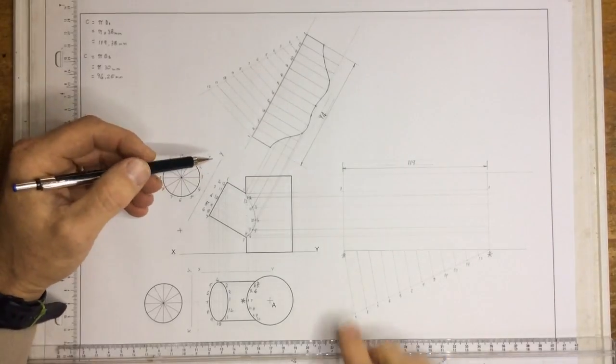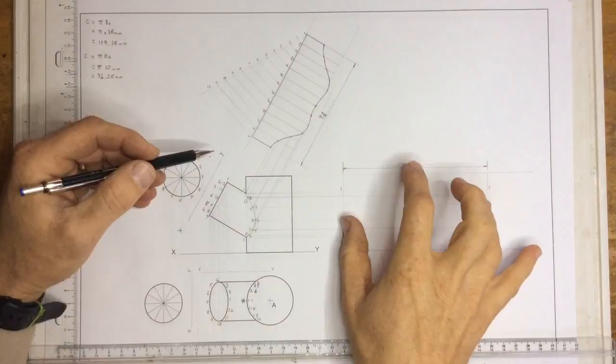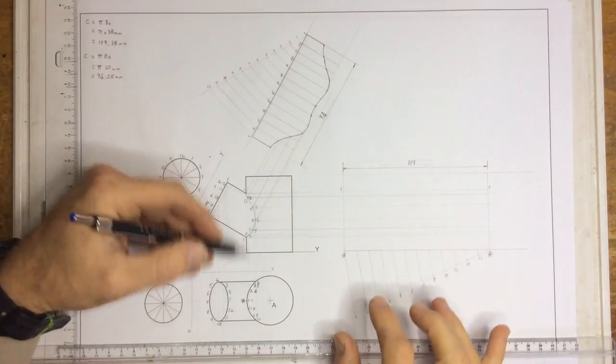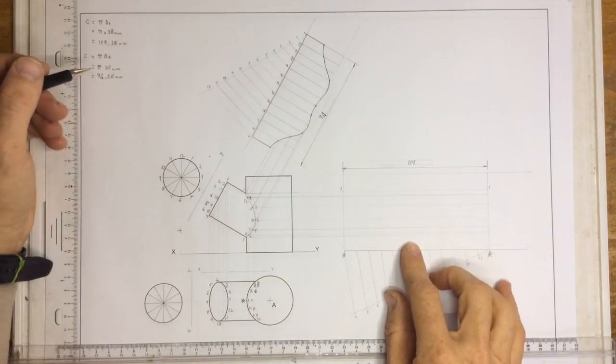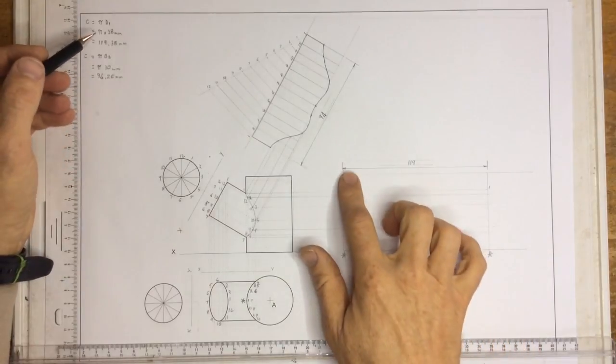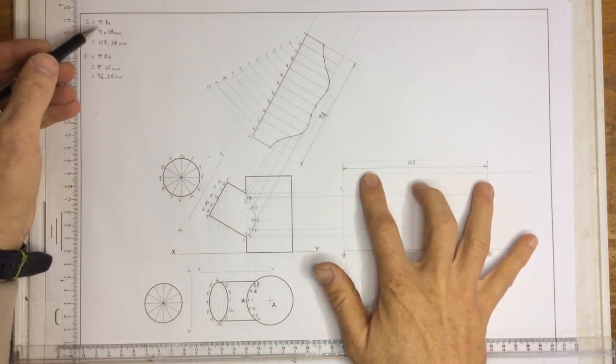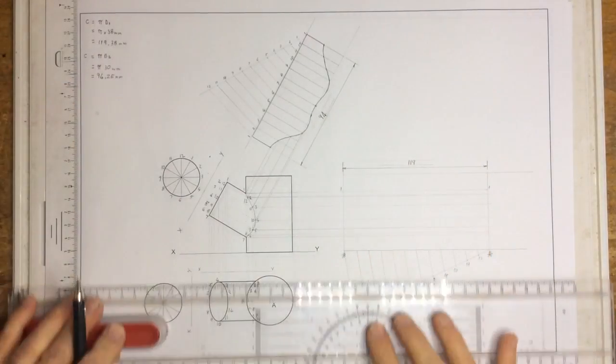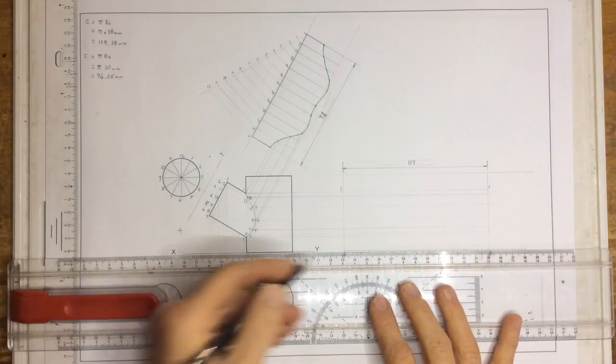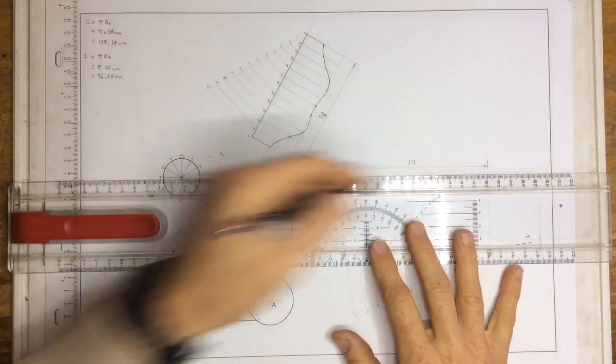We're going to draw the curve of interpenetration on this piece of material from our drawing of the two cylinders intersecting. First, I need to prepare the piece of material. I calculate the circumference which is 119 and I draw in that piece of material so that it lines up with the base and the top.